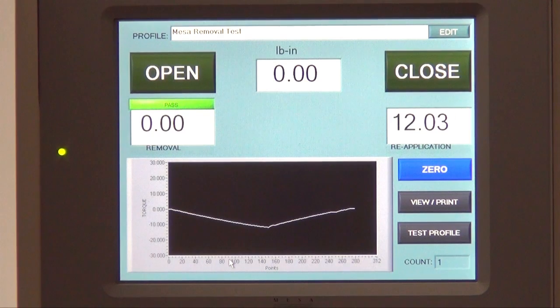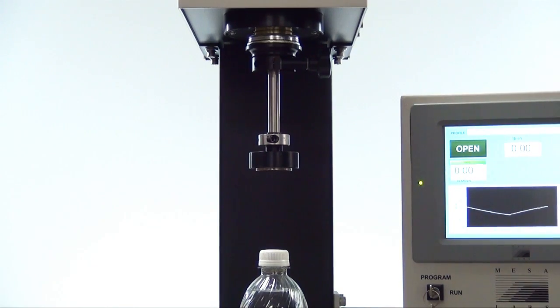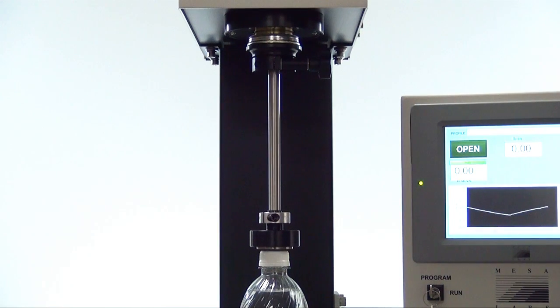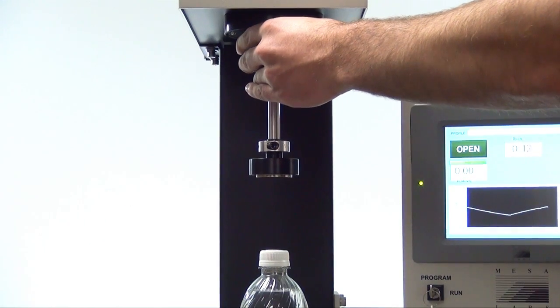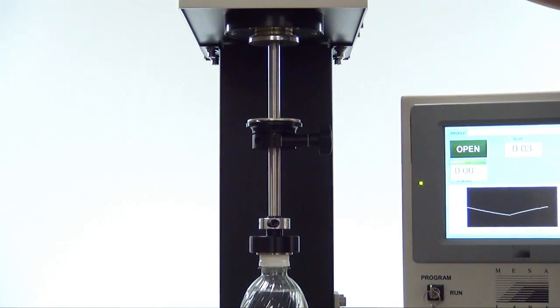You are now ready to put the chuck onto the bottle cap. You can engage the cap onto the chuck in two ways. First, release the lever by turning it counter clockwise and let the D-shaft slide down onto the cap. Second, pull on the magnet located on the top of the D-shaft and let it slide down onto the cap.